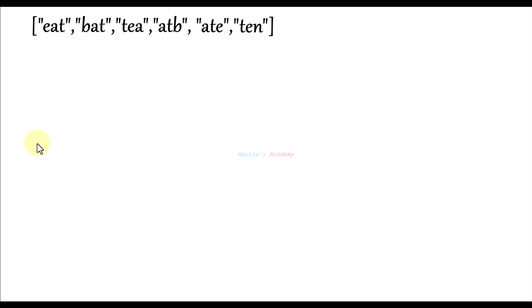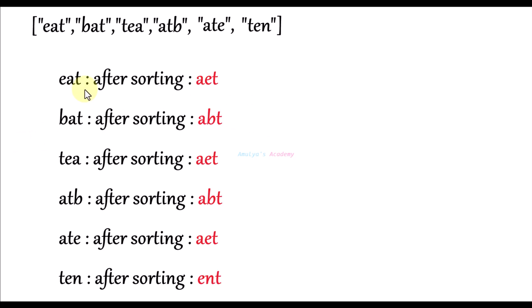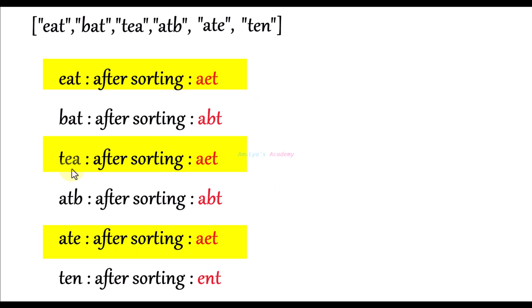We will use the sorting concept. First, we sort the strings in the list one by one. We sort the first string 'eat' and get 'aet', then we sort the next strings one by one. When we sort 'eat' we get 'aet', when we sort 'tea' we get 'aet', and when we sort 'ate' we get 'aet'. So these three strings all come under the key 'aet'.